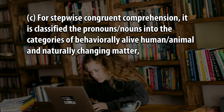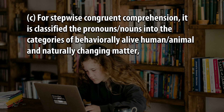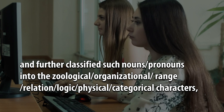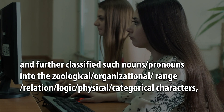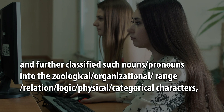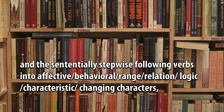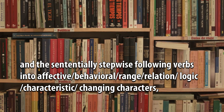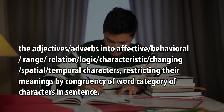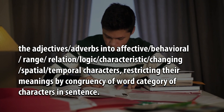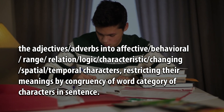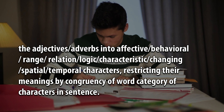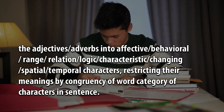c. For stepwise congruent comprehension, it has classified the pronouns and nouns into the categories of behaviorally alive human, animal, and naturally changing matter, and further classified such nouns and pronouns into zoological, organizational, range, relation, logic, and physical categorical characters; the sententially stepwise following verbs into effective behavioral range, relation, logic, characteristic changing characters; and the adjectives and adverbs into effective behavioral range, relation, logic, characteristic changing spatial-temporal characters, restricting their meanings by congruency of word category of characters in sentence.